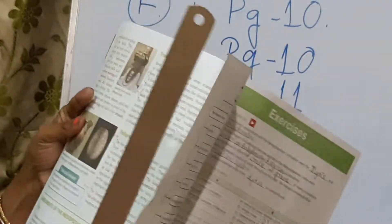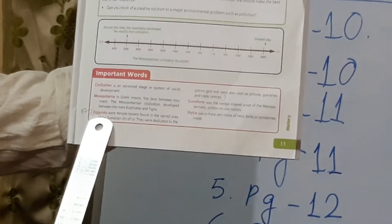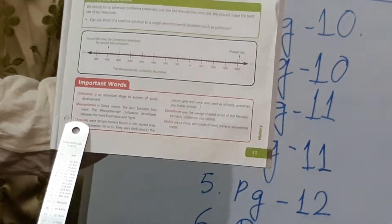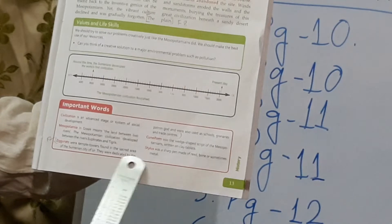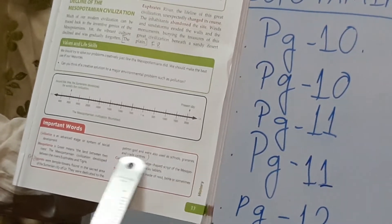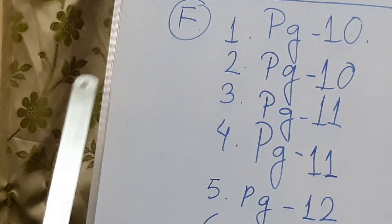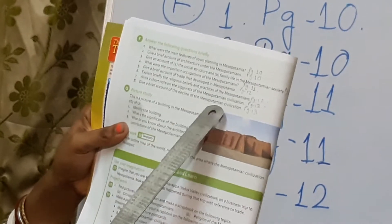Ziggurats of the Mesopotamian civilization. You have to write a short note. So open page number 13. In page number 13, you can see there in the important words this red bordered box. Here you will get the definition of ziggurats. Ziggurats were temple towers found in the sacred area of the Sumerian city of Ur. They were dedicated to the patron god and were also used as schools, granaries and trade centers. From here you will write this short note of ziggurats. Then come to the next question. Next question is question number 8. Give a brief account of the decline of the Mesopotamian civilization.